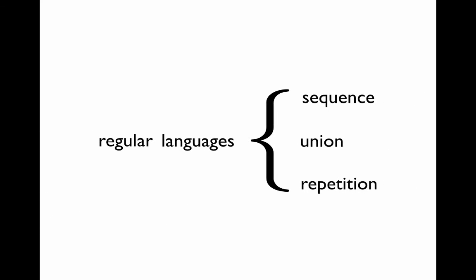So to go from regular languages, which consist of those strings defined by sequence, union, and repetition, we can replace repetition with recursion. And what we end up with is context-free languages. So take repetition, replace it with recursion, and now you have context-free languages.